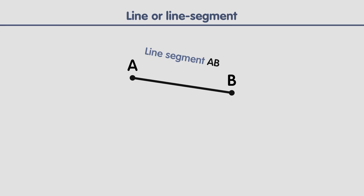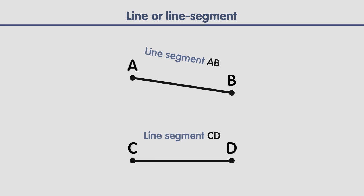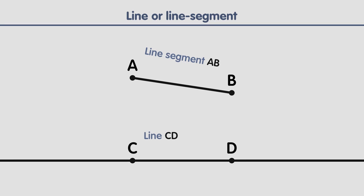Now imagine that we draw another two points — let's say point C and point D — and we join them, creating a line segment CD. But now imagine that we extend this line segment forever in both directions. Well, this is not a line segment anymore. Instead, we have a line. The difference between a line segment and a line is that a line segment has a beginning and an end.